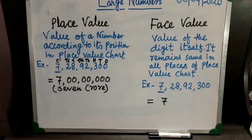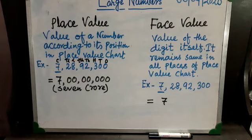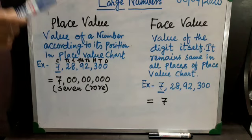Now, what is face value? Face value means the value of the digit itself. It remains the same in all places of the place value chart. Taking the same example — seven crore, twenty eight lakh, ninety two thousand and three hundred — I have underlined the same digit, that is seven.